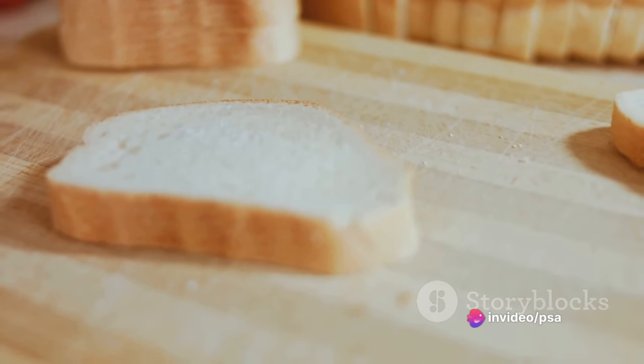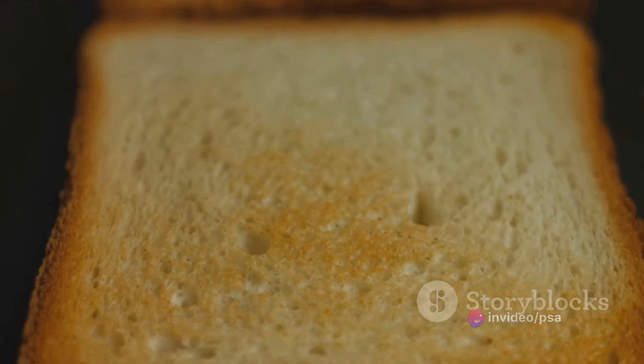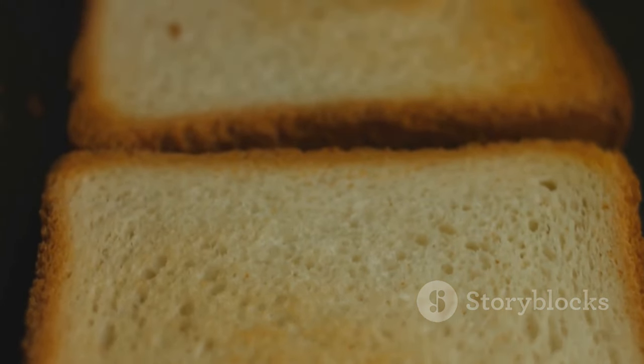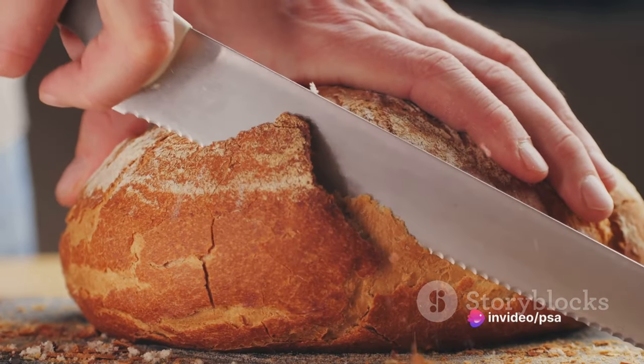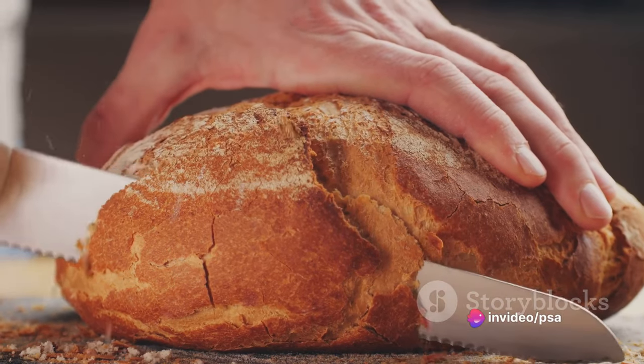Imagine you have two solids of the same height. Now let's slice these solids into numerous thin cross-sections, like slicing a loaf of bread. If every cross-section of the first solid is equal in area to the corresponding cross-section of the second solid, then Cavalieri's principle tells us that these two solids have the same volume. Pretty neat, right?